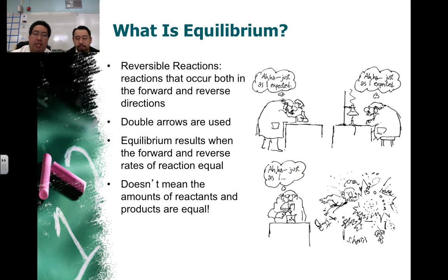So what is equilibrium itself? Equilibrium is something specific for what we call reversible reactions. Now most reactions we've talked about only go in one direction, but there are some that go both forward and reverse. So when you see this kind of reaction displayed in an equation, it uses double arrows.